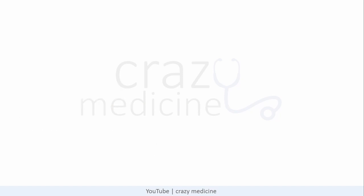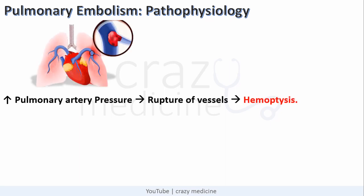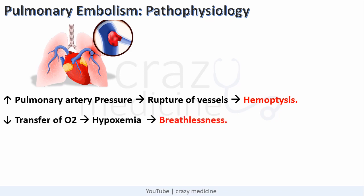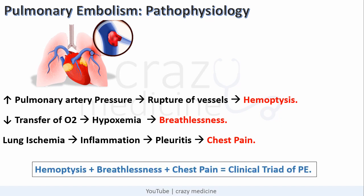Coming to the pathophysiology of pulmonary embolism. Blockage of the pulmonary vasculature leads to increased pulmonary artery pressure, which causes rupture of small vessels, leading to hemoptysis. The blockade also causes decreased O2 transfer, leading to hypoxemia and breathlessness. Due to lung ischemia, there is inflammation of the lung pleura causing pleuritis, and the patient will have pleuritic chest pain. So hemoptysis, breathlessness, and chest pain form the clinical triad of pulmonary embolism.